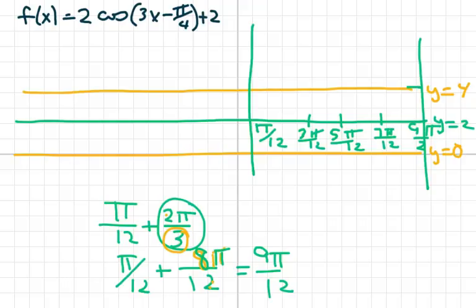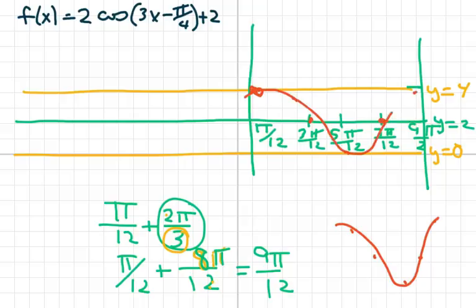Then you just draw your cosine wave — your characteristic wave. It's that V shape, but you make it curvy. Draw your 5 dots and make it curvy. Now to draw the other cycle, I'm going to go to the left, so I'm subtracting 8 pi over 12, and I get negative 7 pi over 12.